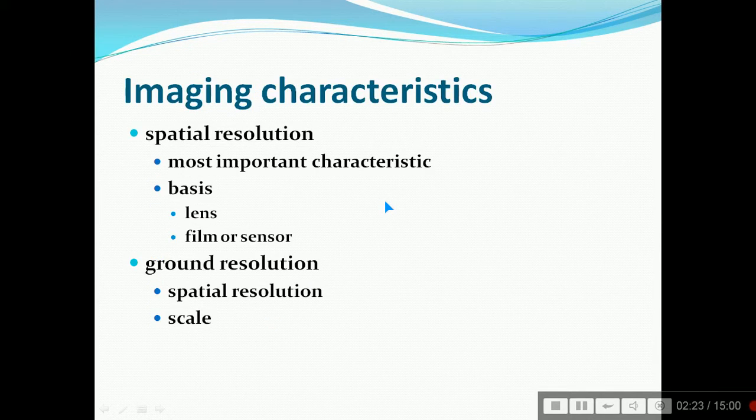What are the imaging characteristics? These are spatial resolution and ground resolution. Spatial resolution is the most important characteristic, and the basis is the lens or the film or sensor which is being used for imaging. When we talk about ground resolution, it comes to spatial resolution and the scale.